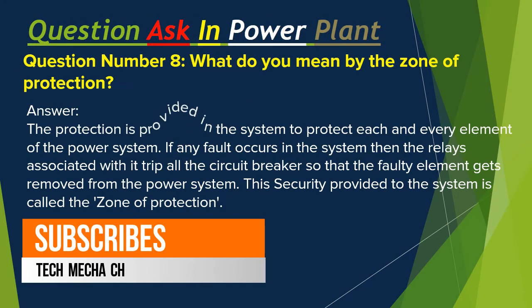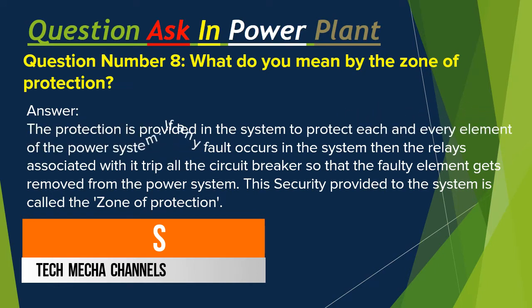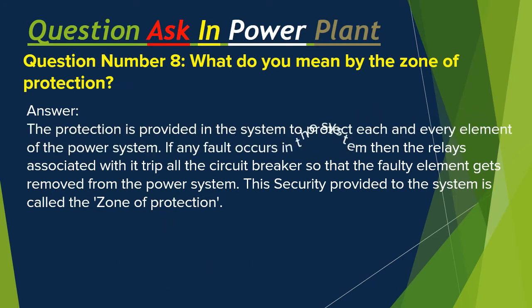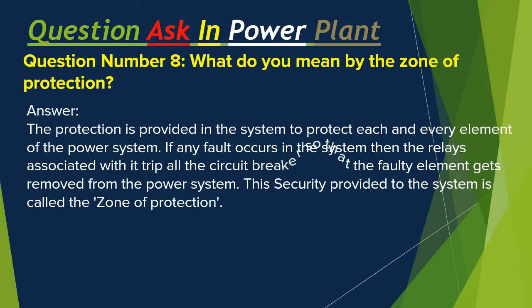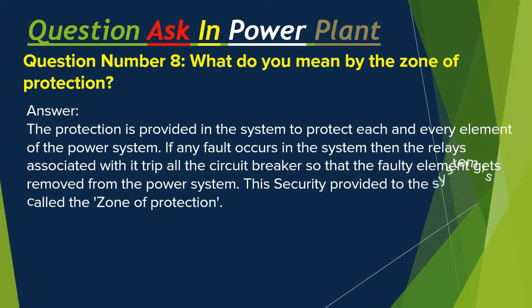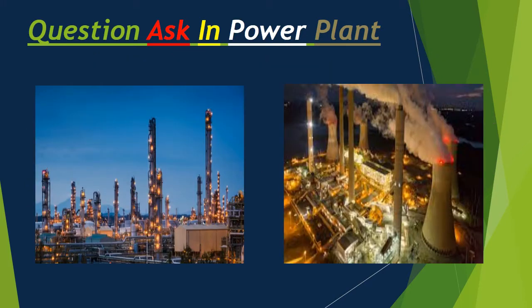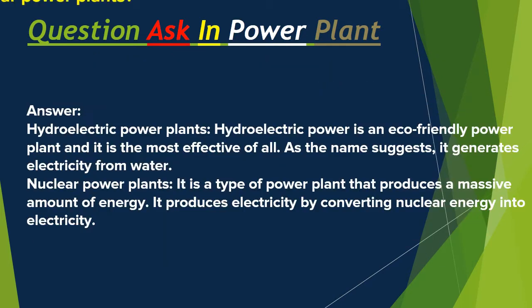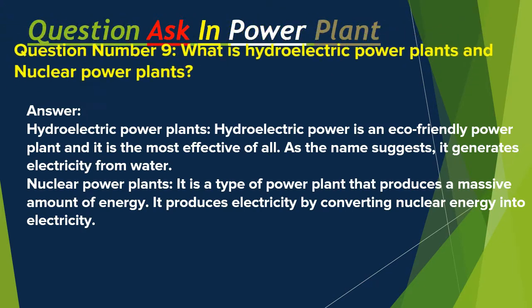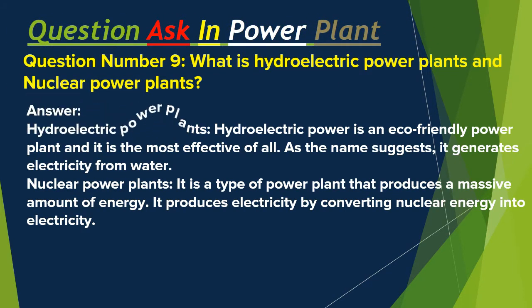Question number eight: What do you mean by the zone of protection? Answer: Protection is provided in the system to protect each and every element of the power system. If any fault occurs in the system, the relays associated with it trip all the circuit breakers so that the faulty element gets removed from the power system. This security provided to the system is called the zone of protection.